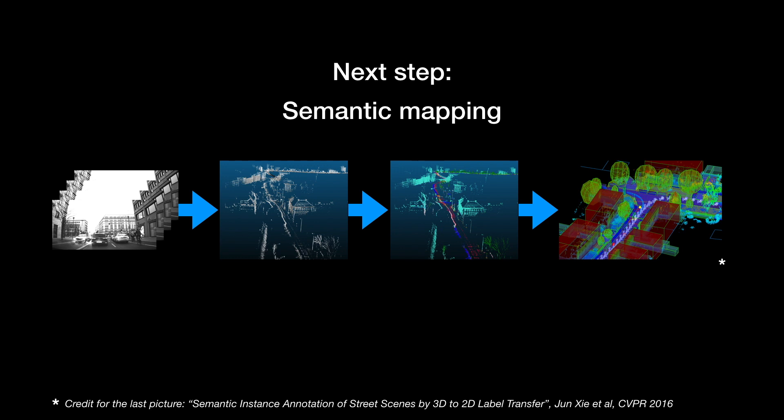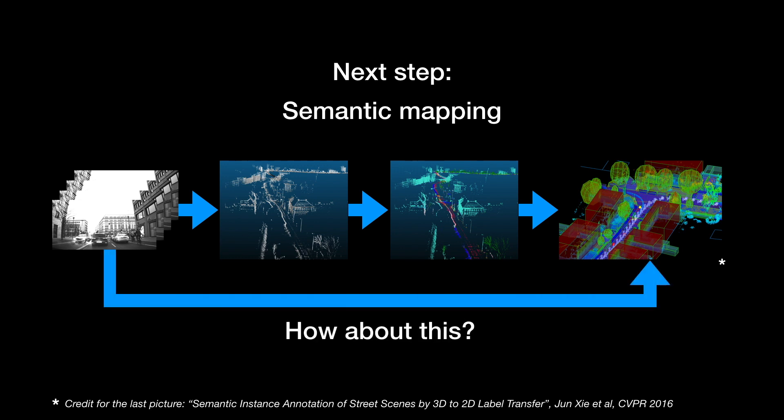Instead of following the common pipeline, in this work we raise the question, is it possible to estimate the final HD map directly from the input data? This could provide several benefits, such as we can utilize more information directly from the images. We can also avoid introducing errors from all intermediate steps. In this work, we show that such a direct approach is possible.